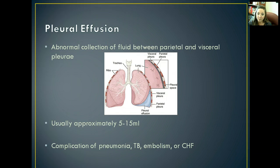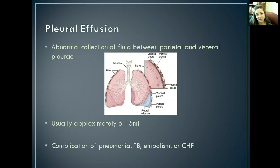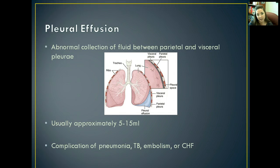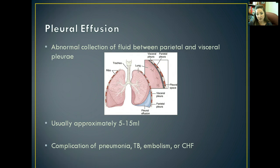A pleural effusion is a fluid accumulation between the parietal and visceral pleura. Once that fluid accumulates it puts pressure on the lungs and can eventually cause atelectasis - lung collapse - or destruction of those alveoli. It's the same concept as cardiac tamponade, where fluid in the pericardium put pressure on the heart. This can eventually cause respiratory failure. It's usually approximately five to fifteen milliliters of fluid, which is enough to put significant pressure on the lungs.